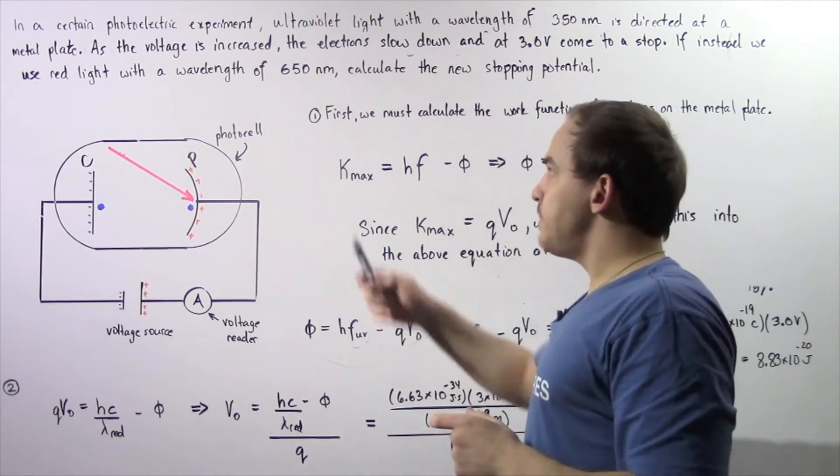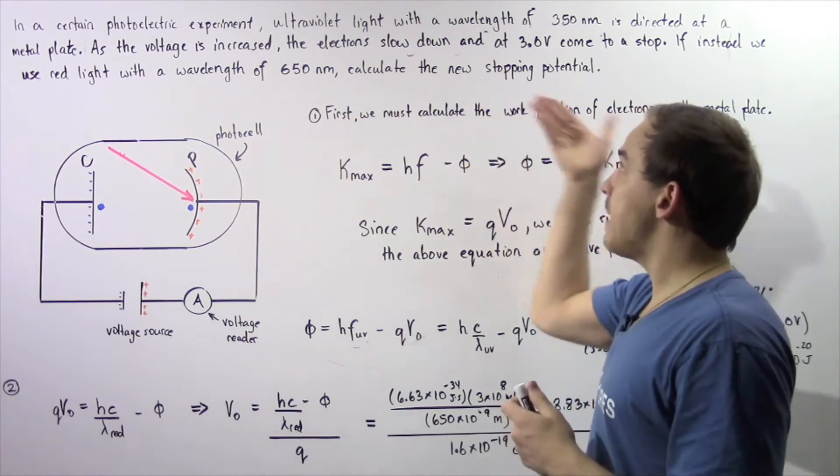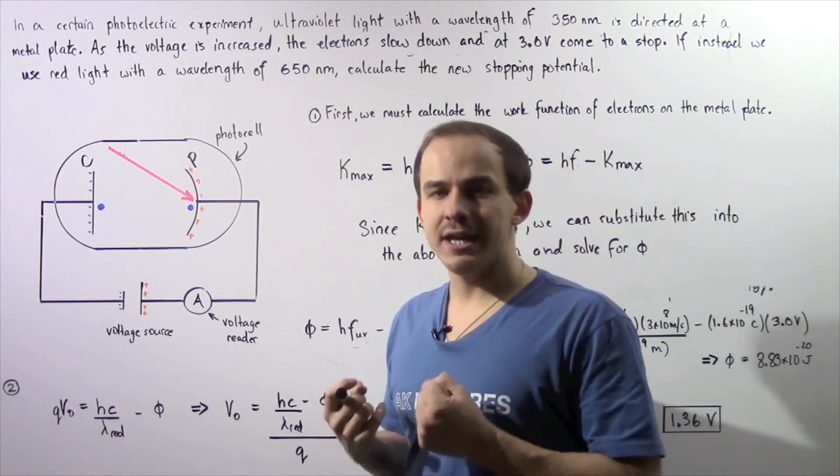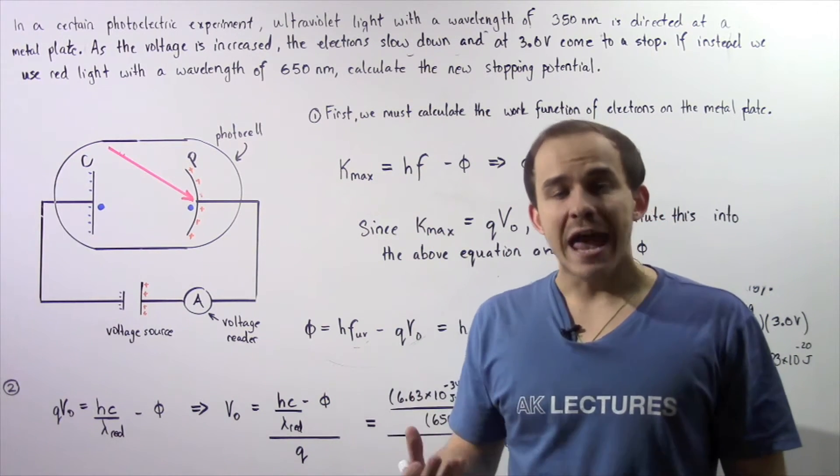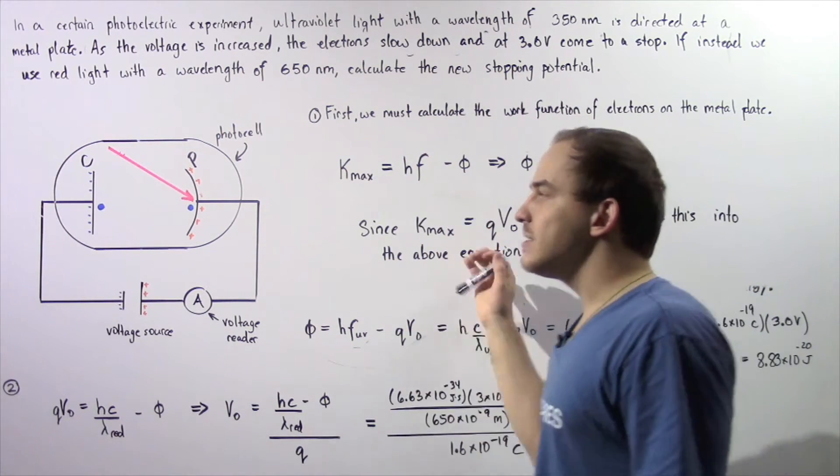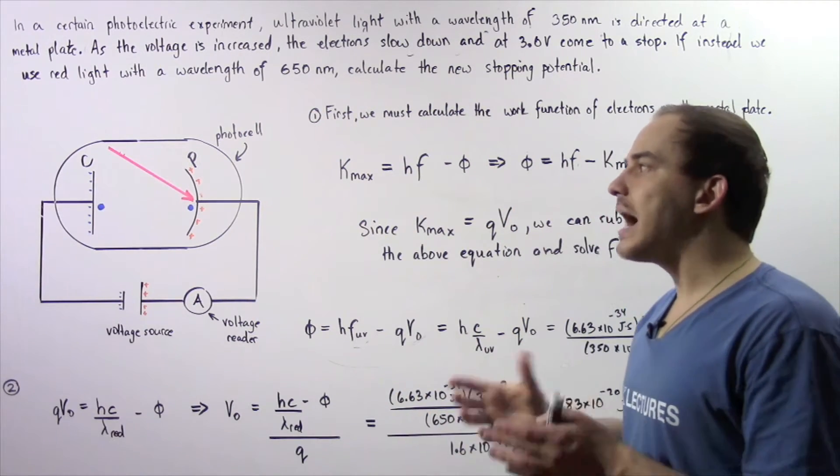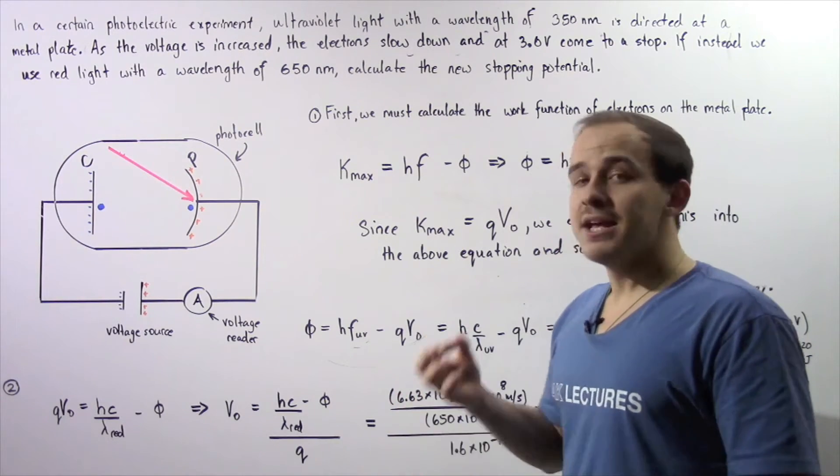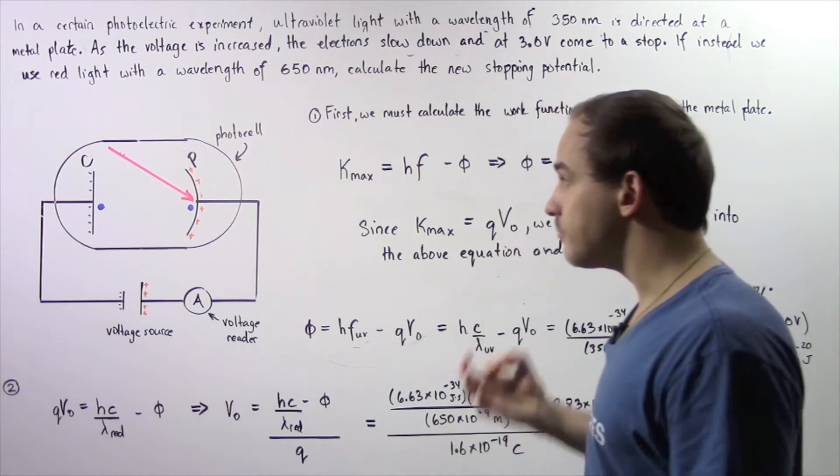So let's begin with step 1. In step 1, we basically want to use the information we're given to calculate what the work function of our electron is. The work function is basically the amount of energy the electron that is found on plate P must gain to be ejected from plate P. Now it doesn't matter what type of light we use, the work function of the electron does not change as long as we don't change this plate P.